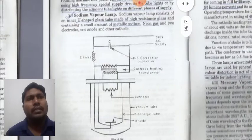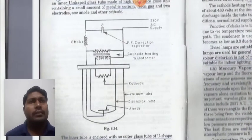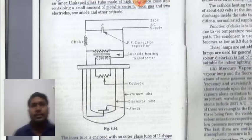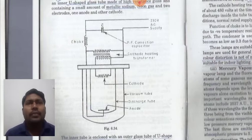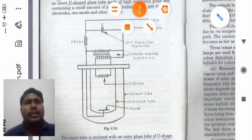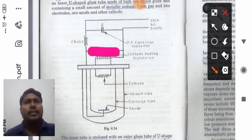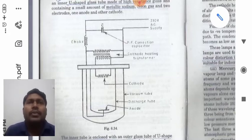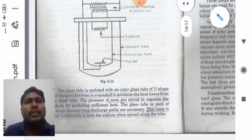Looking at the circuit diagram, there is a U-shaped glass, an anode, a discharge tube, a vacuum tube, and a cathode. The cathode heating transformer is present. For correction of power factor, we have a capacitor. A choke is connected in series to the 230 volt AC supply. The supply is AC. Now the diagram part is over — let us discuss its theory.